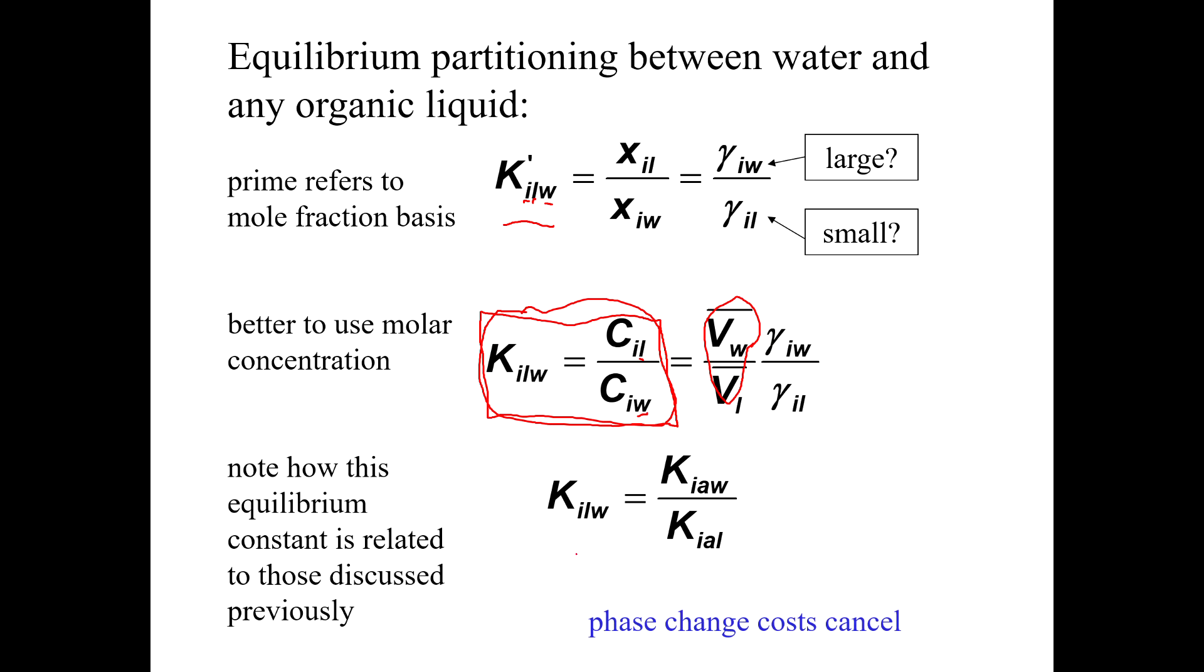And this equilibrium constant, of course, is related to others that we've already seen. So we could describe KLW as a function of the air-water partition coefficient divided by the air-to-liquid partition coefficient. If you happen to know the octanol air partition coefficient, KOA and KAW, you could back out of that what KOW is. But KOW turns out to be relatively easy to measure, so you don't usually have to calculate it.